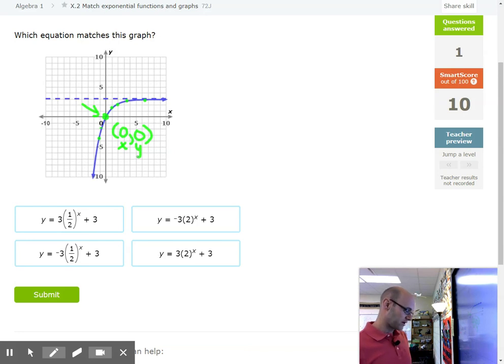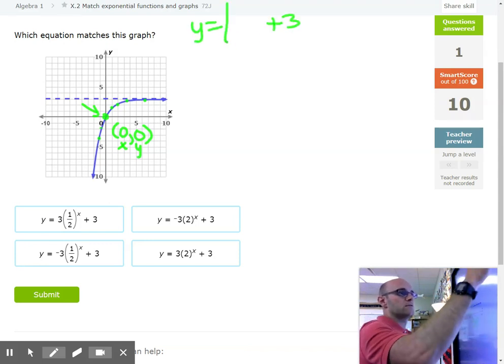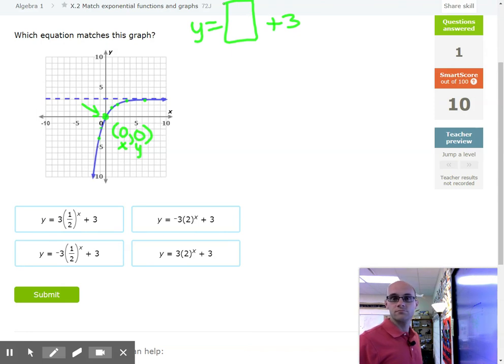So which equation has that point is our good starting point? Some of these might be able to be eliminated. So which equation, if you plug in a zero, would give you a zero? Hmm. I noticed they all have a plus three on the end. What do you add to a three to get a zero? It'd be negative three, wouldn't it?